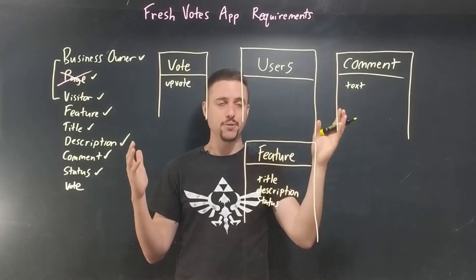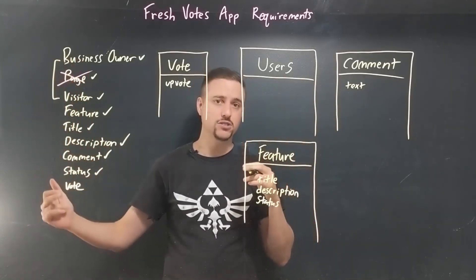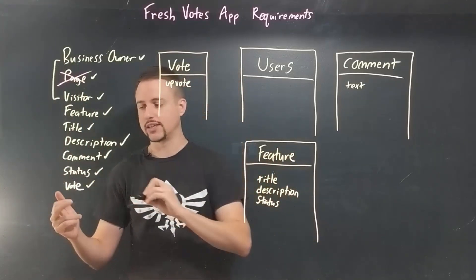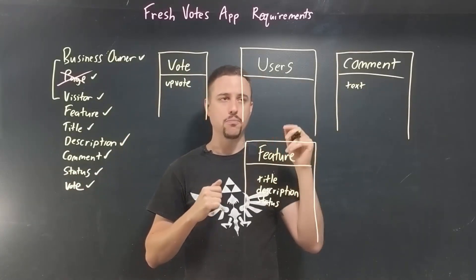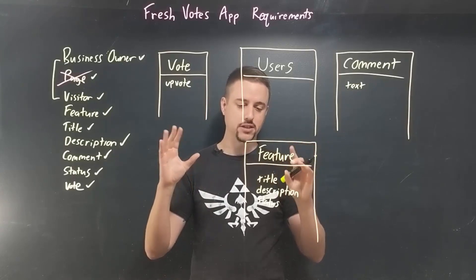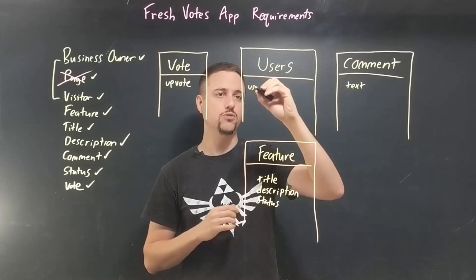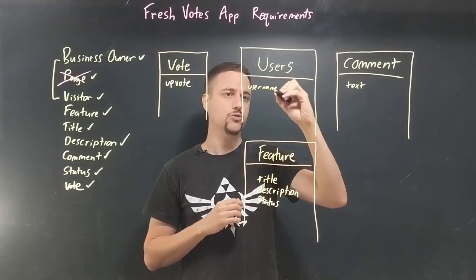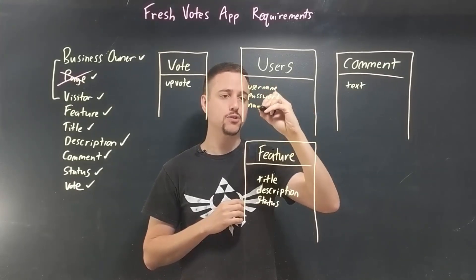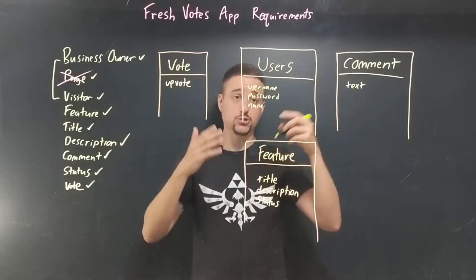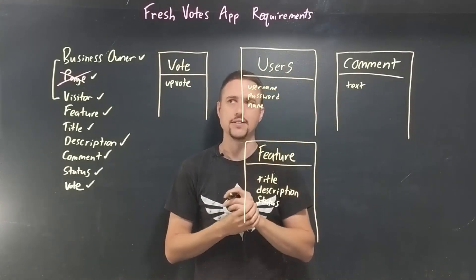So we're diving into the FreshVotes app and the requirements in terms of the database schema that we've sort of outlined. We've gone through our nouns that we talked about in the previous video and we've created our database tables, but we did not insert any other properties or relationship information between these tables. I forgot to mention the users table should have a username, probably a password, and maybe even a name — the person's actual user name itself.